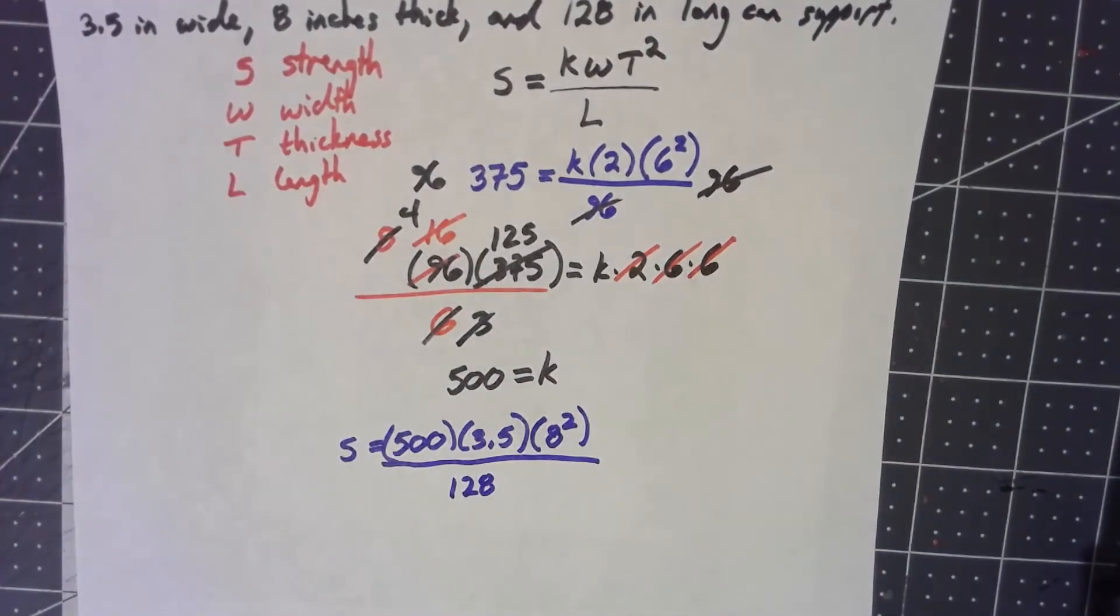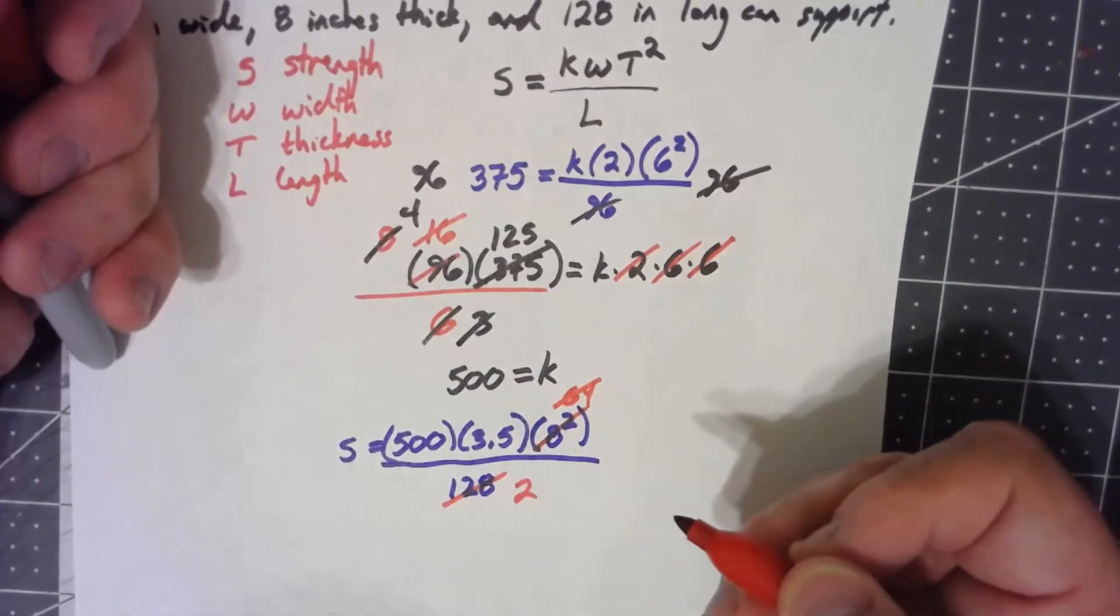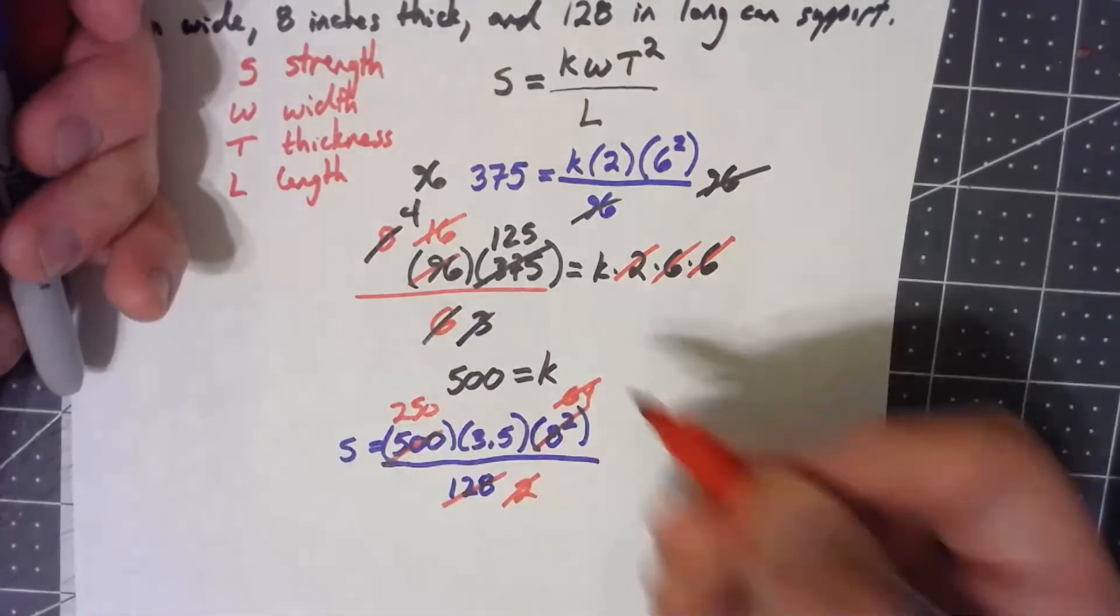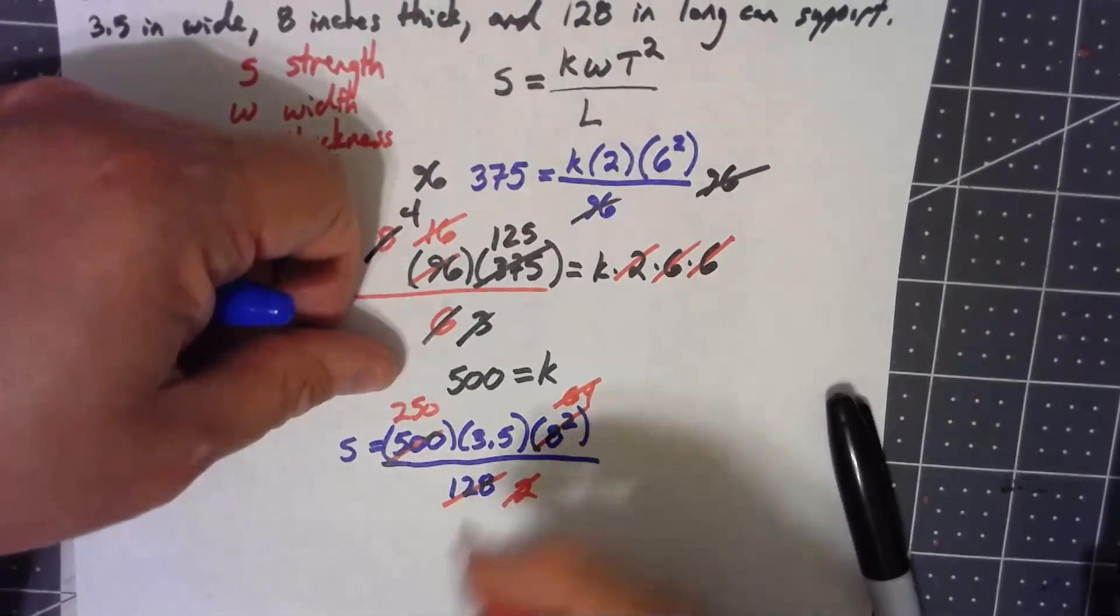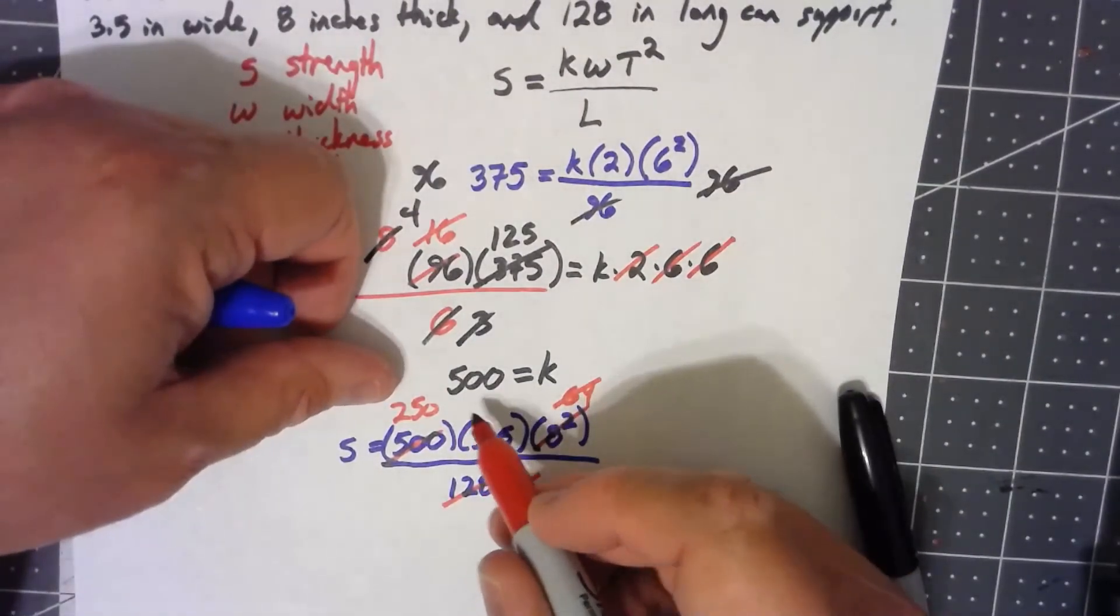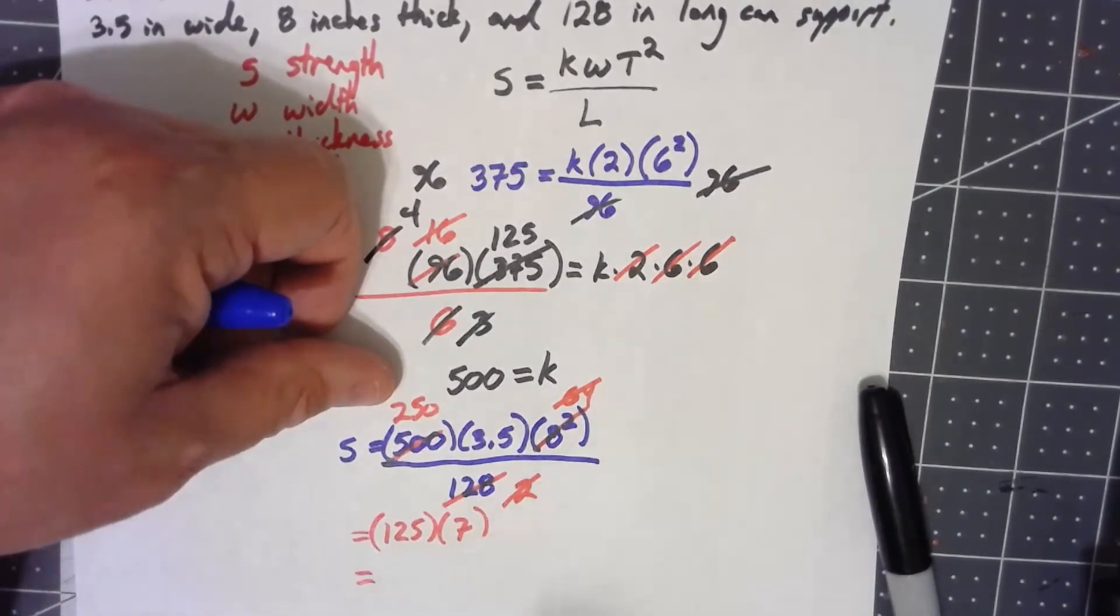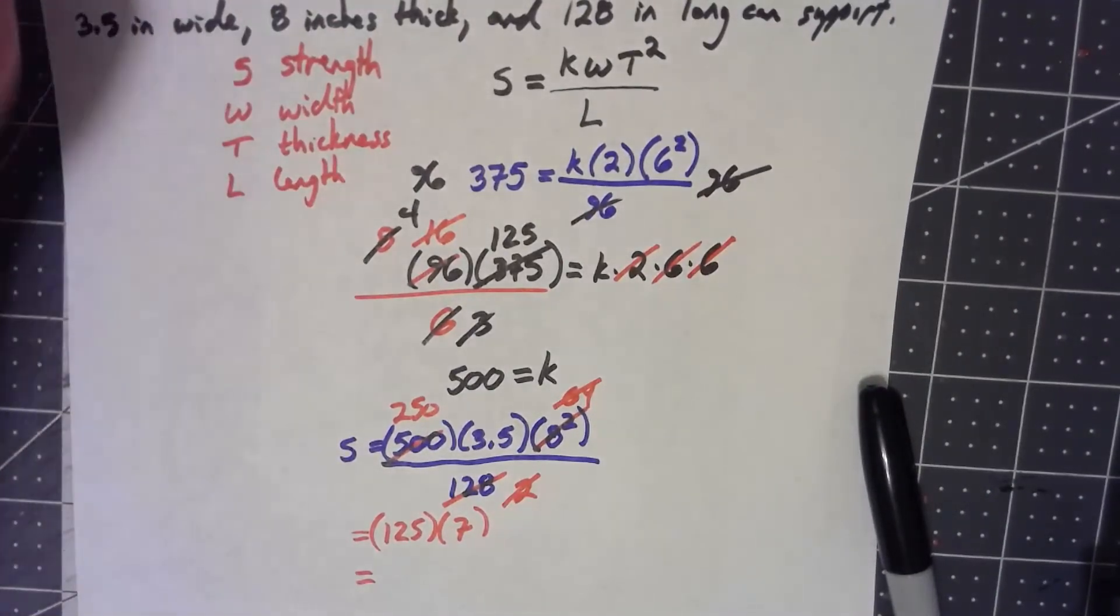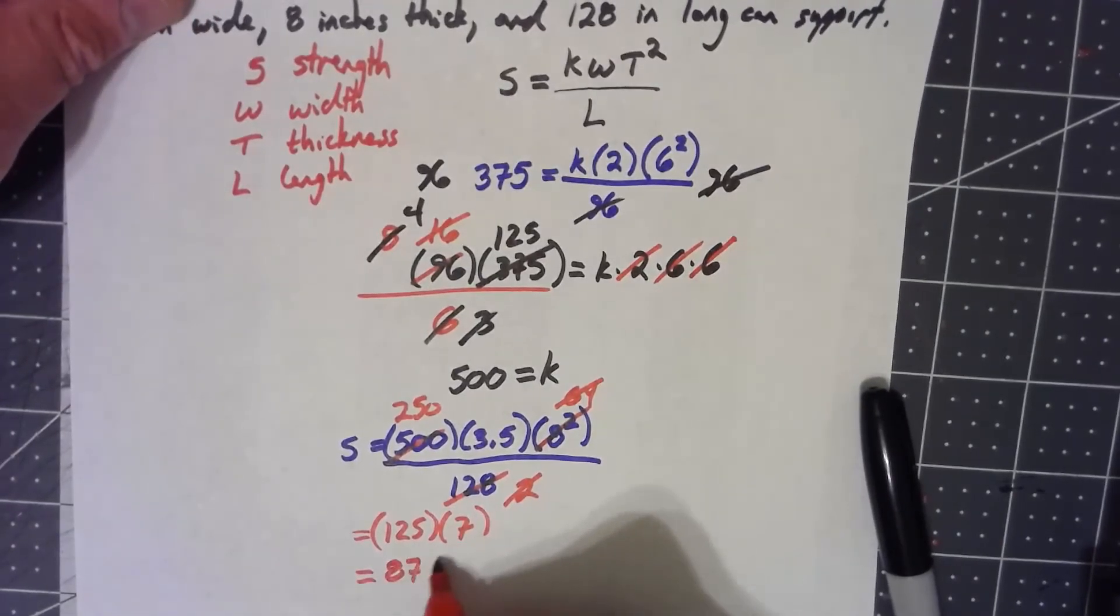Let's see here. 8 squared is 64. 64 goes into 128 twice. 2 goes into 500, 250. 250 times 3.5 is the same thing as 125 times 7 would be 700, 875 pounds.